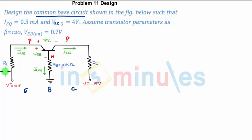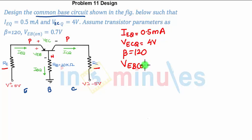They have told you to design the common base circuit, that means they have not given you the value of RE and RC. The rest of the values they have given: IEQ is 0.5 milliampere, VECQ (usually we write VCEQ in case of NPN transistor) that they have given as 4V, and VEB (which we write VBE in NPN) as they have given as 0.7V.